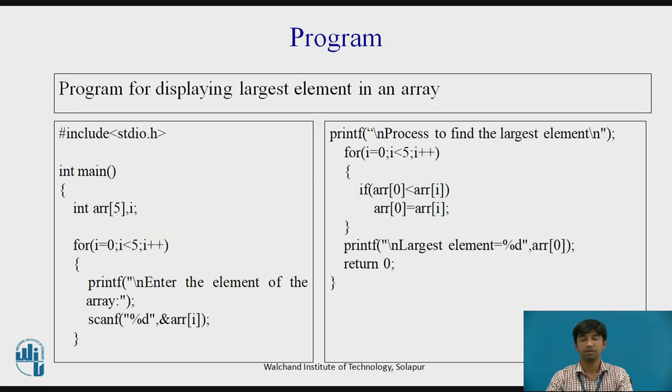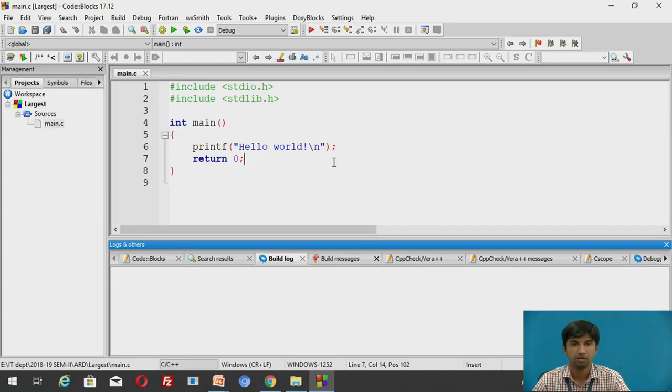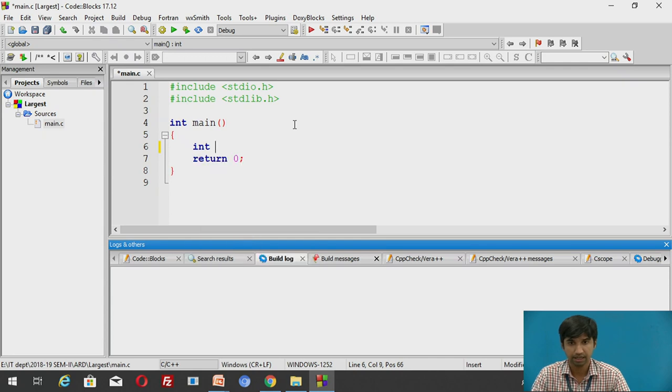Now we will be discussing how to write a program for displaying largest element in an array through the code blocks software. Basically this will be the default program when we open the code block software. So i want to find the largest element in an array. So basically i will declare an array as we have discussed in the last class. int array of 5.